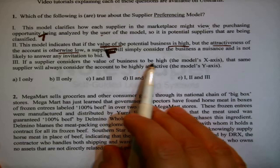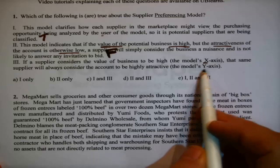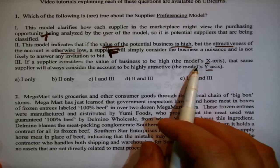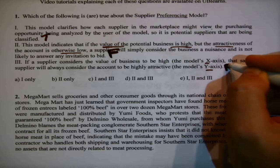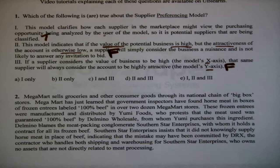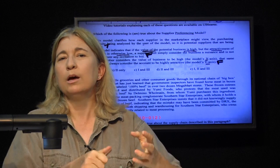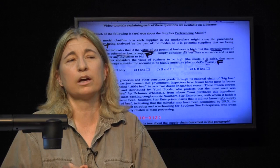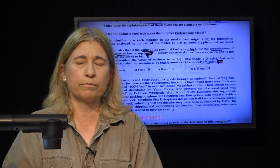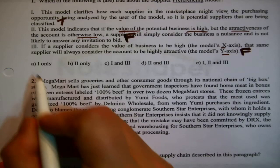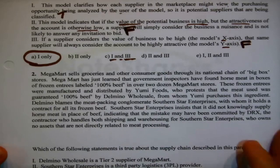They would give you a big number in terms of price just to see if you would take it — they don't really care if they lose the bid. Now the third statement: if a supplier considers the value of the business to be high, that same supplier will always consider the account to be highly attractive. This is just nonsense. You could be talking about spending a lot of money but still not be an attractive account for other reasons. Those two things do not necessarily travel together. So the only thing that tested true is the first statement — that would be partial credit.